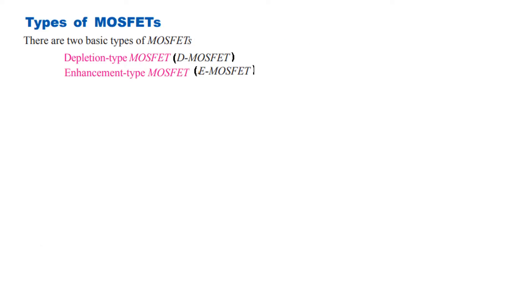So this device is used where high input impedance is required. Now the types of MOSFET there are two types we just saw depletion MOSFET and enhancement MOSFET also known as D-MOSFET or E-MOSFET.